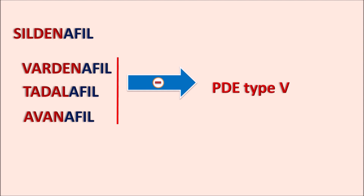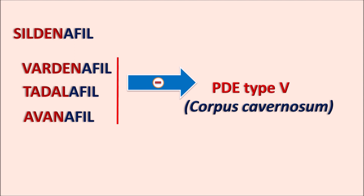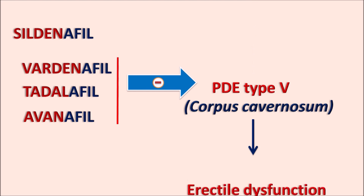Phosphodiesterase enzymes are responsible for cleavage of the diester phosphate bond, and different types of phosphodiesterase enzymes are present. Among them, phosphodiesterase type 5 enzyme is present on the corpus cavernosum. Sildenafil and other drugs like vardenafil, tadalafil, and avanafil all inhibit this phosphodiesterase type 5 enzyme, thereby producing vasodilatation as well as smooth muscle relaxation. That's why these drugs are indicated in the treatment of erectile dysfunction.